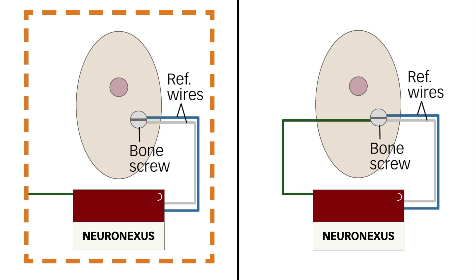Typically, the reference wire is tied to a bone screw. The ground wire can be connected to a Faraday cage around the O-Drive or tied together with the reference wire at the bone screw.